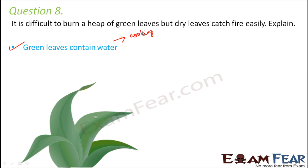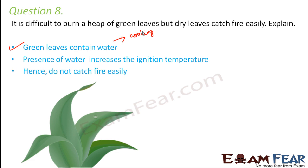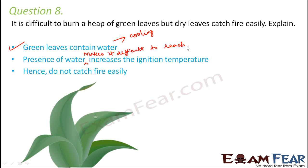Due to the presence of water, there is a cooling effect, which effectively increases the ignition temperature required, making it difficult to reach. Therefore, green leaves do not catch fire easily. Dry leaves, however, do not contain water, so it is easier for them to reach their ignition temperature and catch fire.